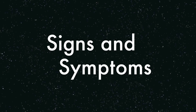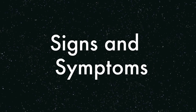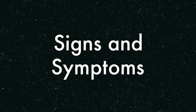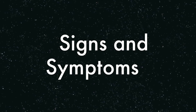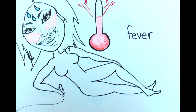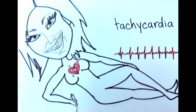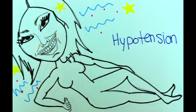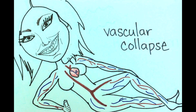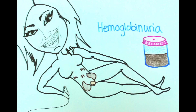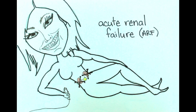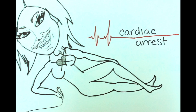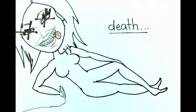An acute hemolytic reaction may be mild or severe, and it will develop within 15 minutes of the initiation of the transfusion. The signs and symptoms may include chills, fever, lower back pain, flushing, tachycardia, tachypnea, hypotension, vascular collapse, hemoglobinuria, jaundice, bleeding, acute renal failure, shock, cardiac arrest, or death.